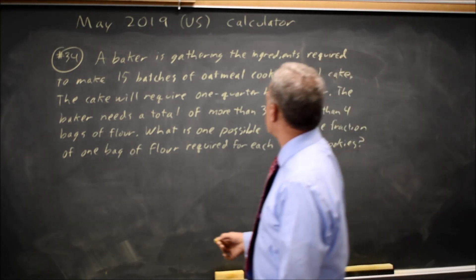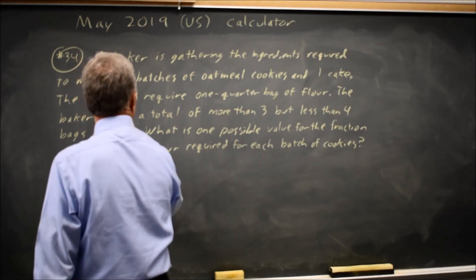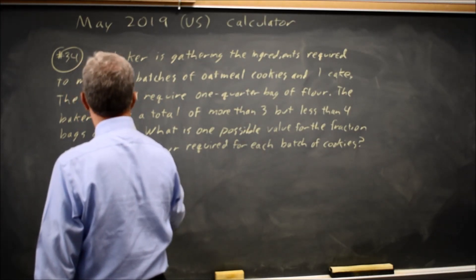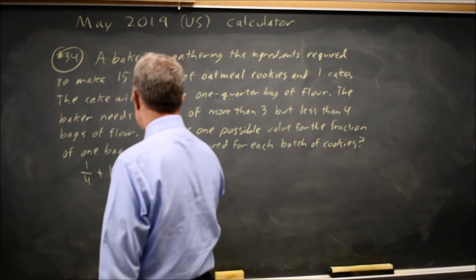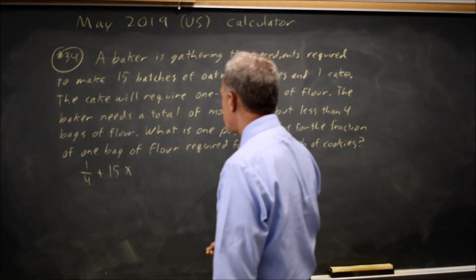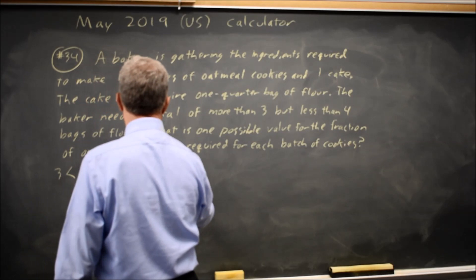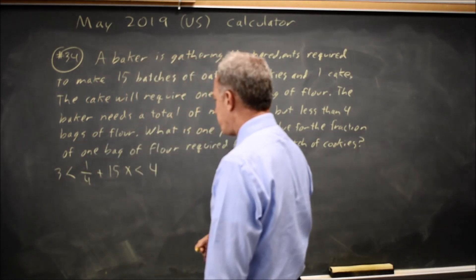The cake requires one quarter bag of flour and the 15 batches of cookies require s each. They say this will be a total of more than three and less than four sacks of flour.